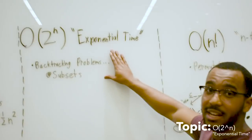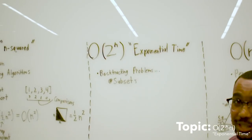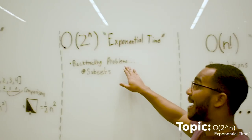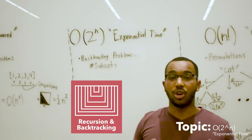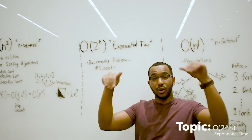Then we have 2 to the n, could be 4 to the n, could be 6 to the n. We have exponential time. Exponential time, we normally see when we have backtracking problems, recursive problems that are creating forks.